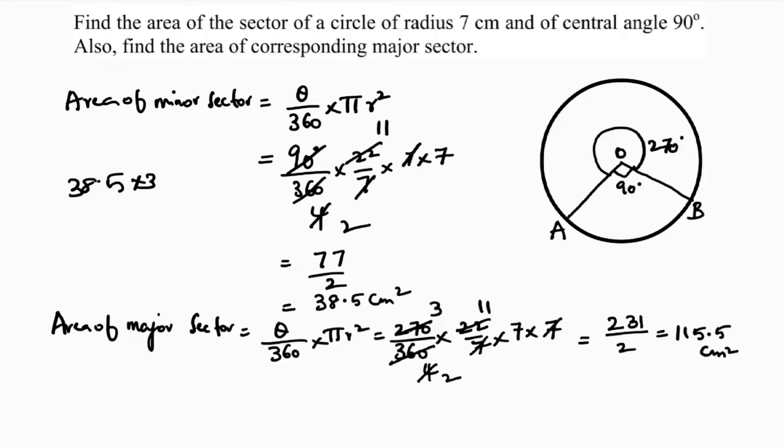So like that also you can tell if it is a blank or something, quickly you can finish. Because 90 is 1 part, 270 is 3 times, so directly you can do into 3.